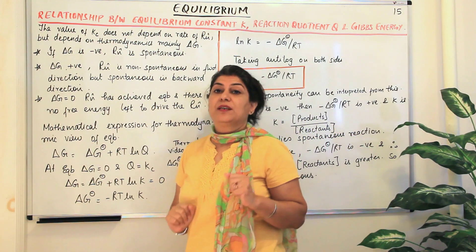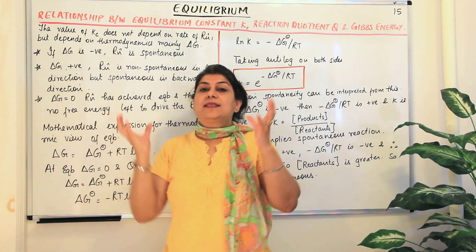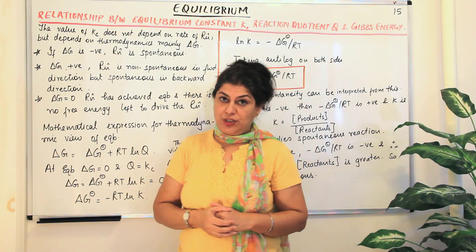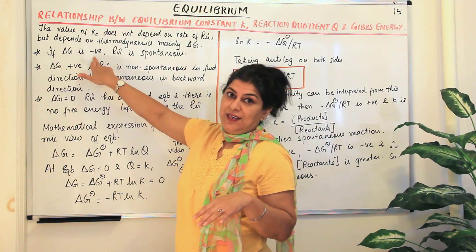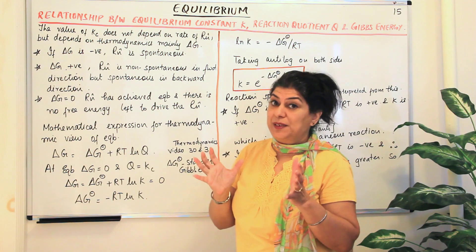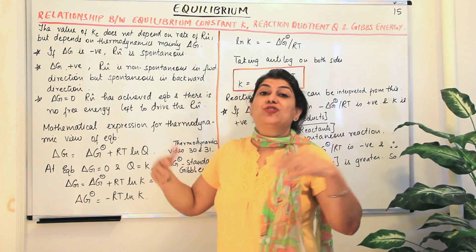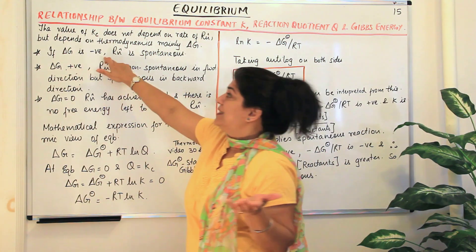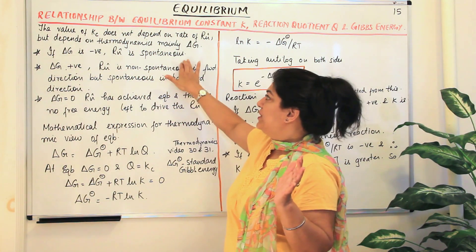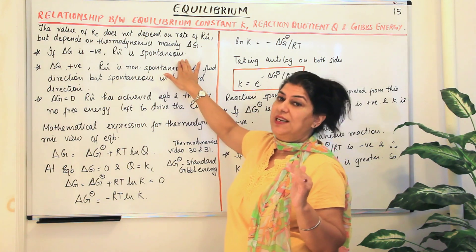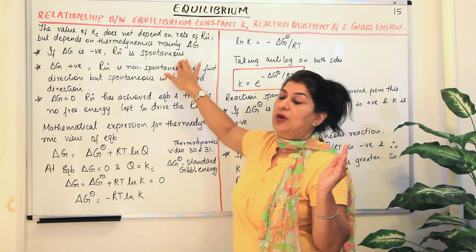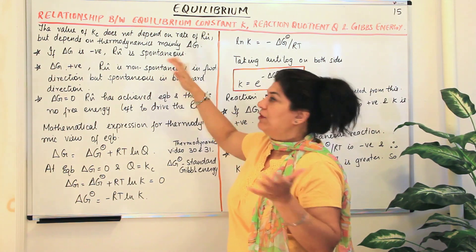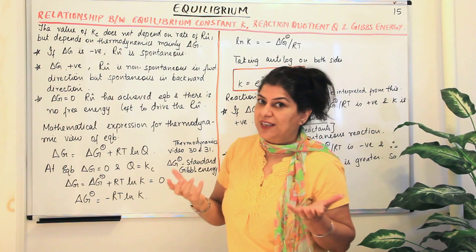We also studied in thermodynamics that the sign of delta G gives us an idea about the spontaneity of a reaction. If the value of delta G is negative, the reaction is feasible and spontaneous — it happens on its own. If you are unable to understand this, I would encourage you to view the videos related to free energy in the chapter thermodynamics.